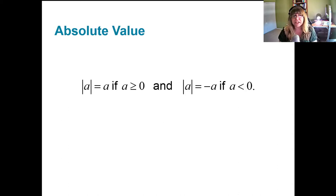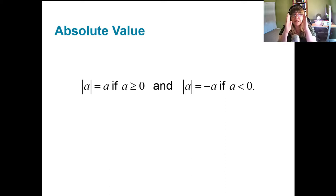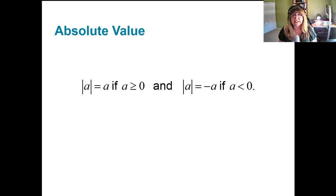Starting with the definition of absolute value: if our value, let's say a, is greater than or equal to zero, then the absolute value — those two up-and-down straight lines — of a when a is positive is a. When a is negative inside those absolute values, then the absolute value of a is negative a, or the opposite of a.